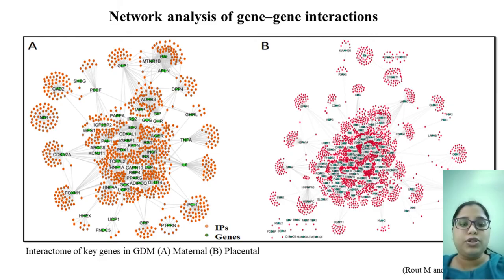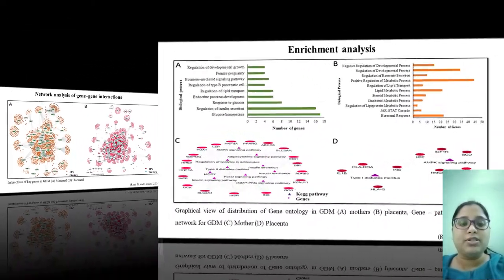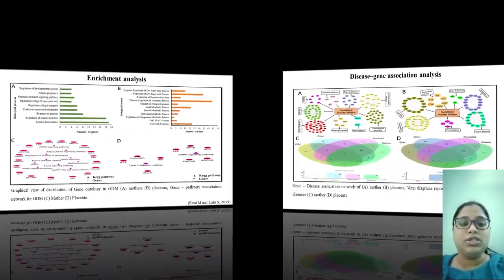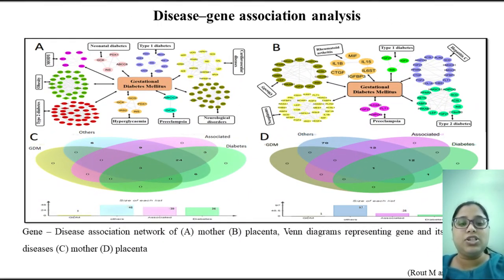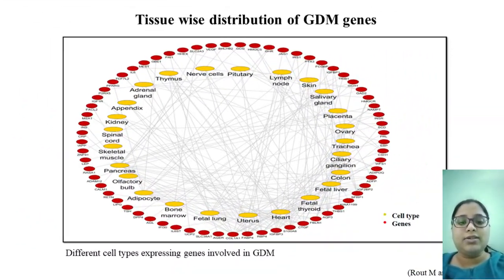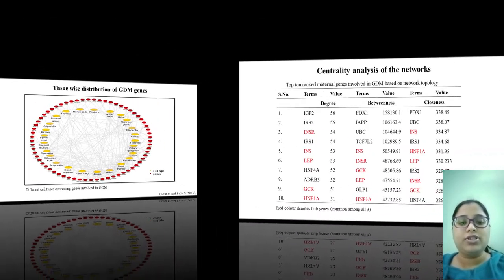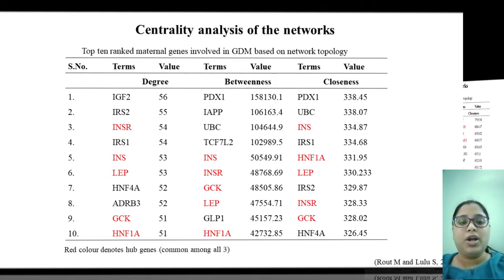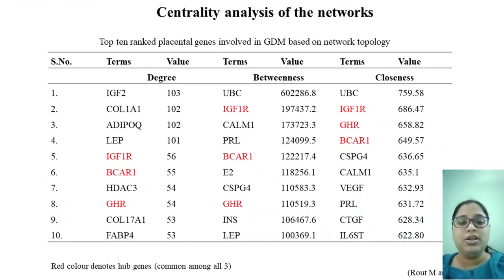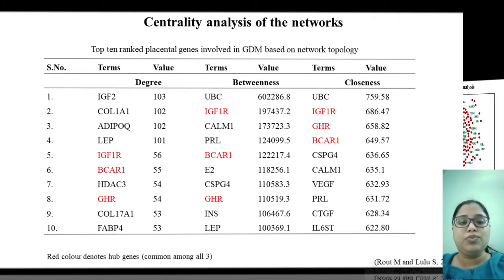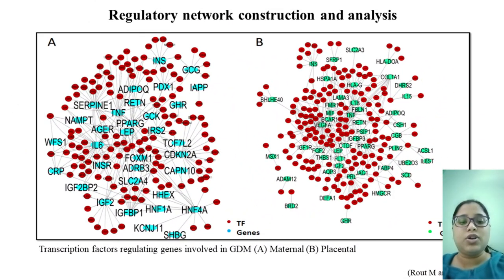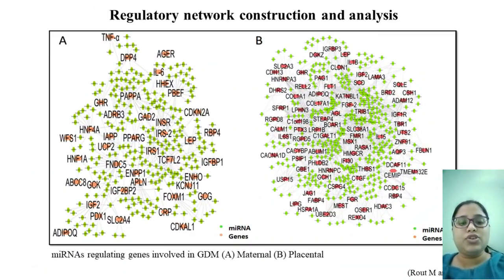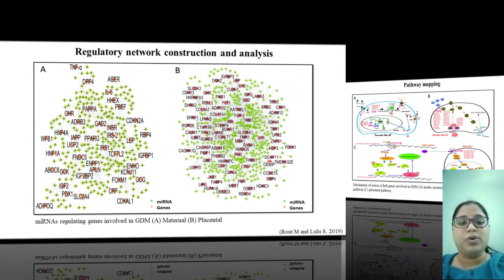We constructed interactomes of protein-protein interaction networks — maternal and placental — along with the regulatory function network and associated co-morbidities, as well as the cell types in which these genes were expressed. To identify highly interconnected genes, we used three centrality measures: degree, betweenness, and closeness. We identified five hub genes for maternal and three for placental. When mapped onto pathways, the maternal genes regulated insulin secretion and signaling pathways, while the placental genes were responsible for the amino acid transport pathway and the beta cell dysfunction pathway.